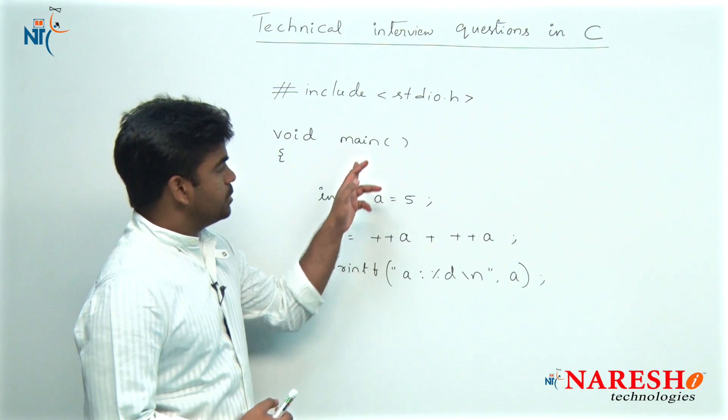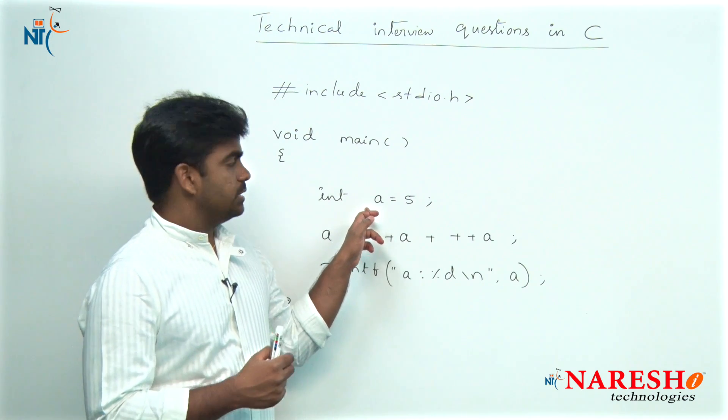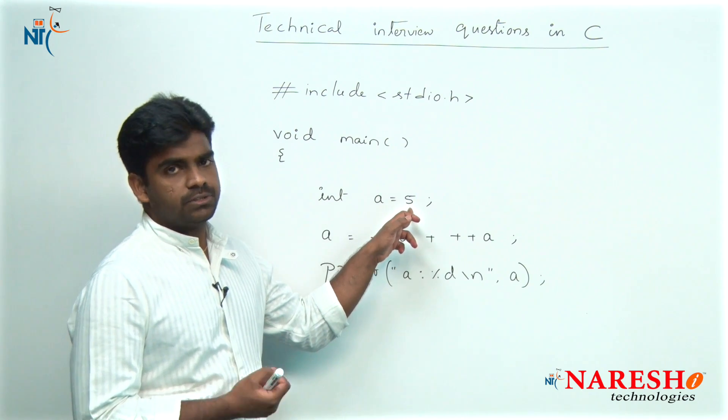Here the execution starts from the main function. First, a value gets memory allocation and here it is direct initialization with a value 5.